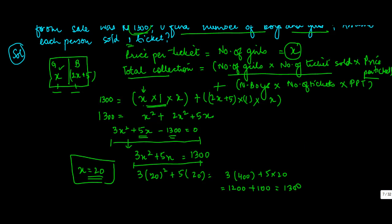So you get x is equal to 20, so the number of girls in the class is 20. The number of boys in the class is 2 into 20 plus 5, which is equal to 45. And the price per ticket is x, which is equal to 20.